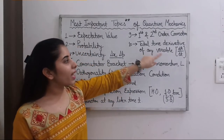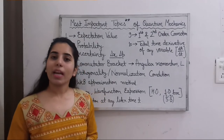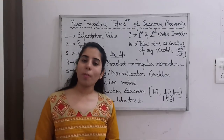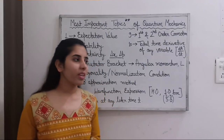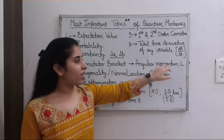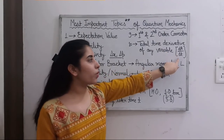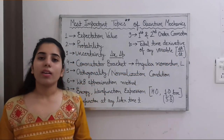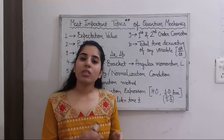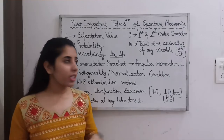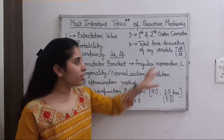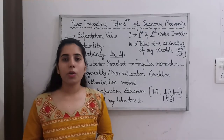The final topic is the total time derivative of any variable. If you need to find the total time derivative of any variable, you have just one formula — using it you just need to solve some steps and you get the answer. Basically, you need to find dA/dt for some variable A. The expression for dA/dt is given in terms of the commutator bracket with the Hamiltonian and the partial derivative. So just with the help of that expression it will be easy to get the answer.